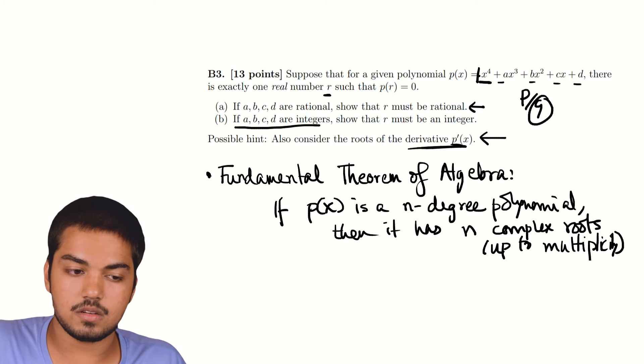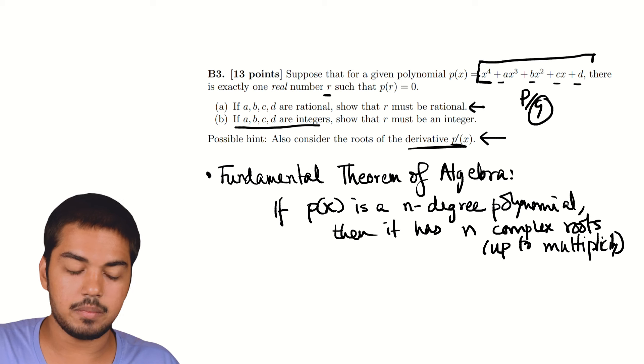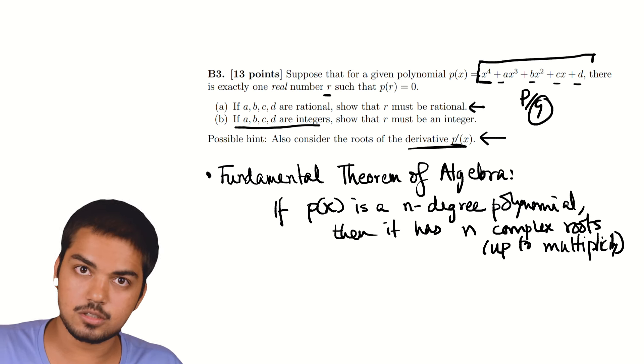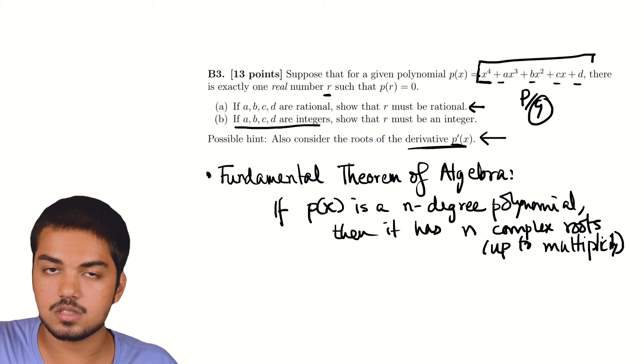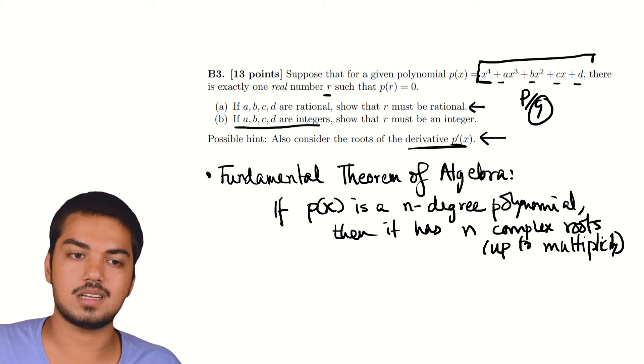If a, b, c, d are integers, that means you have an integer polynomial. In particular, you have a rational polynomial. And so, by part a, the r must be a rational number. So, you have a rational root. And since the leading term of this polynomial is 1, the leading coefficient is 1, the rational root must actually be an integer. Well, that's all there is to it.